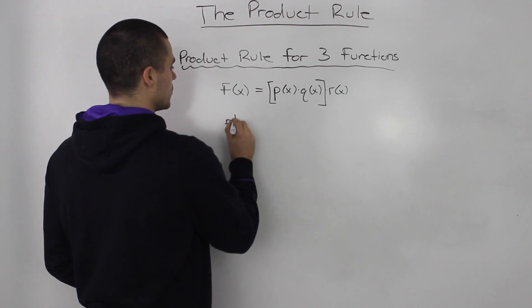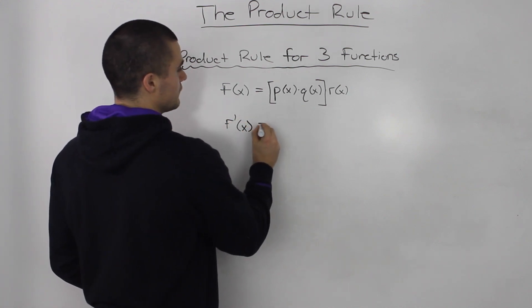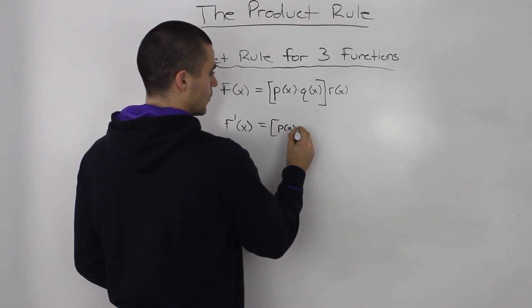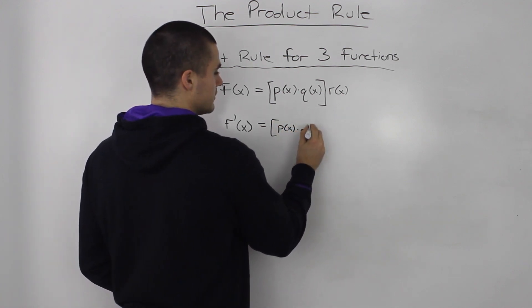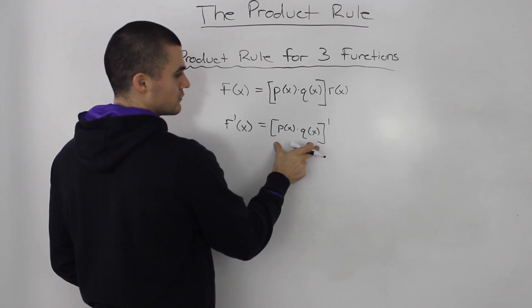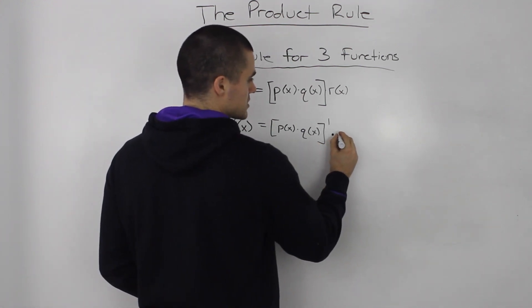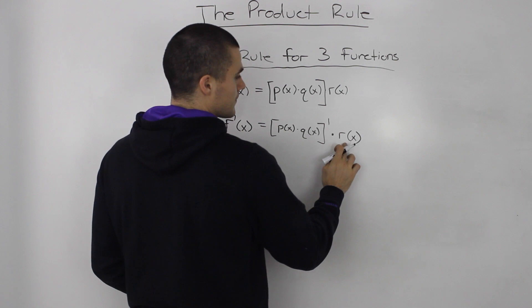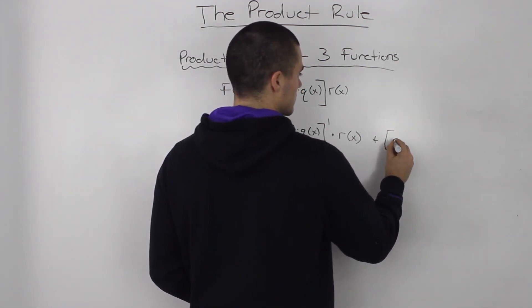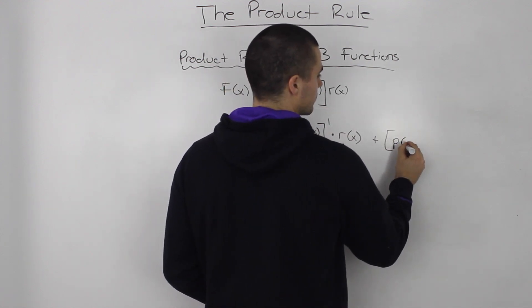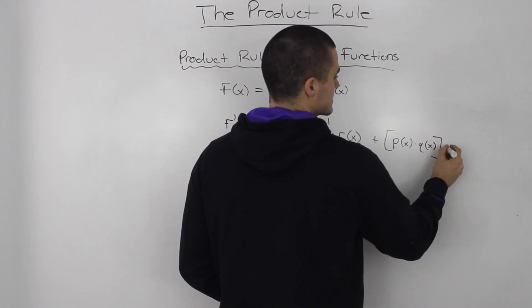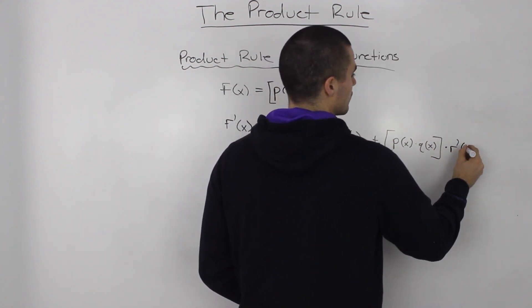So the product rule, when we take the derivative, we take the derivative of the first function, which is this whole thing. So that denotes that that's the derivative of the first function times the second function, plus, let's rewrite the first function times the derivative of the second function.